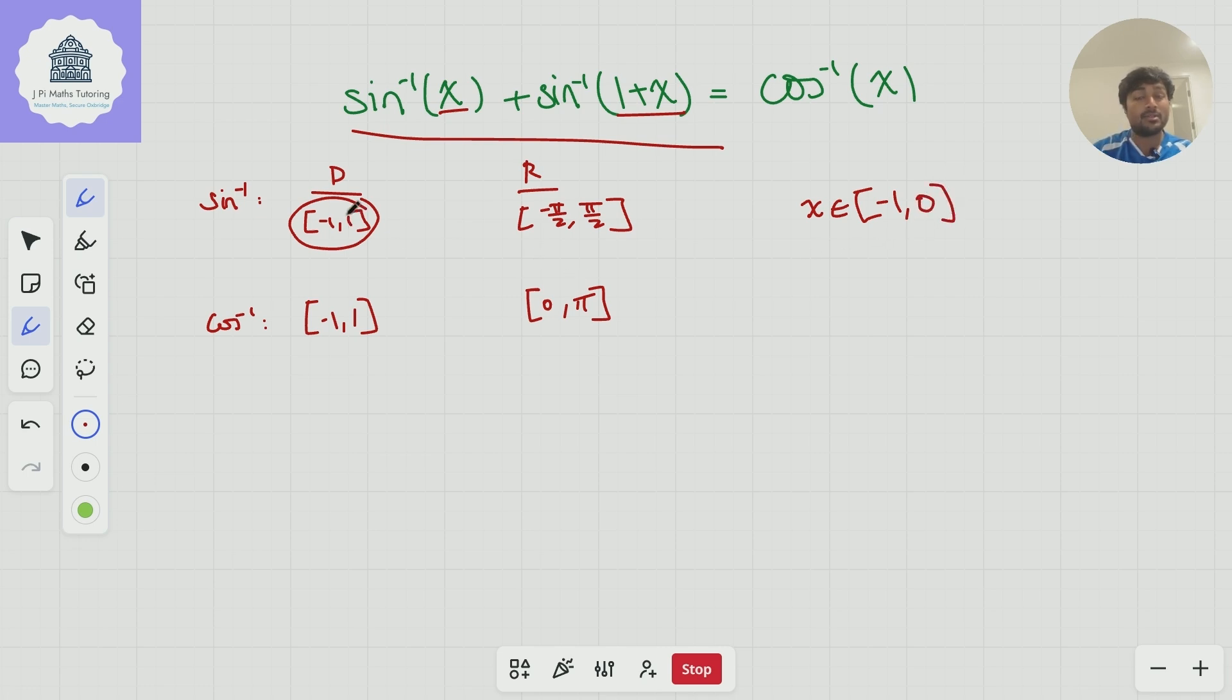If it's any bigger than that, if x was a positive number, then x plus 1 would be bigger than 1, which is no good. So straight away, we know that x has to be between minus 1 and 0 for this left-hand side to just even exist.